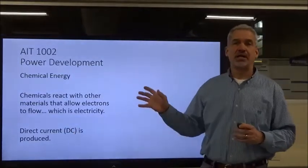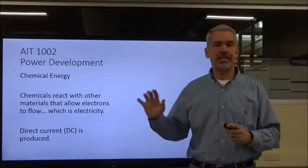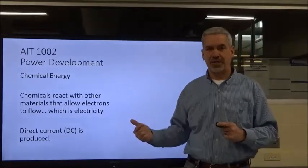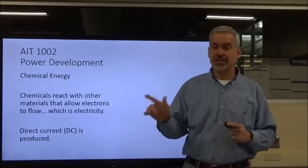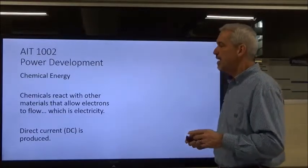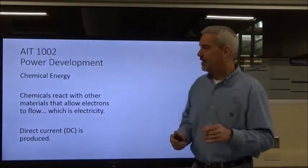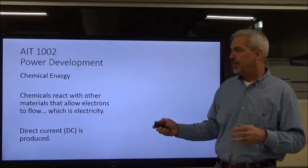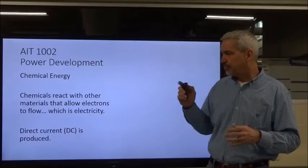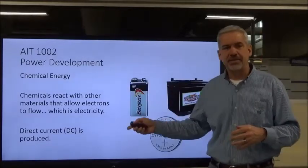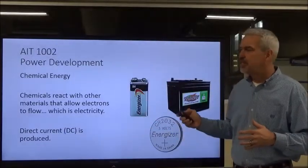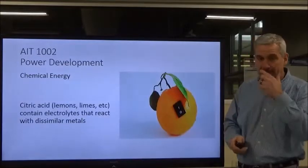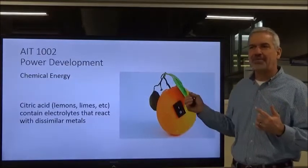You're going to hear a lot about DC — direct current — and AC — alternating current. AC does not stand for air conditioning, not in my class. The most common place you've seen chemical energy is in batteries, but I remember as a kid at the science fair, some kid would come up with a source of electricity using a piece of citrus fruit, mostly a lemon.